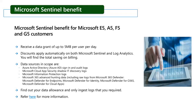Just to recap for customers with Microsoft 365 E5, A5, F5, and G5 licenses, there is a Microsoft Sentinel benefit of data grant up to five megabytes per user per day. Discounts will apply automatically on both Microsoft Sentinel and log analytics, and you'll find the totals reflected on your billing. Here is a list of data sources which are in scope — for example, Azure AD logs, Microsoft 365 advanced hunting data, and many more. In terms of best practices, you should find out your total data allowance per day by multiplying the total number of licenses in your organization with five megabytes. There's also a built-in workbook called the Microsoft Sentinel cost workbook which will help you visualize your Microsoft Sentinel benefits ingestion.